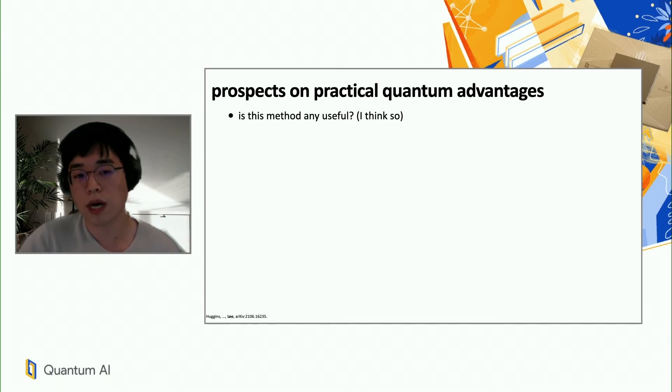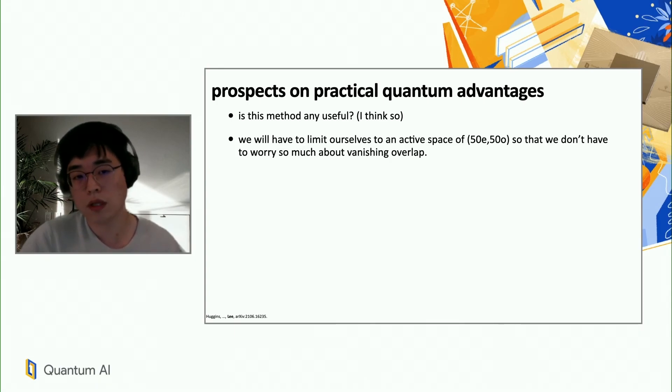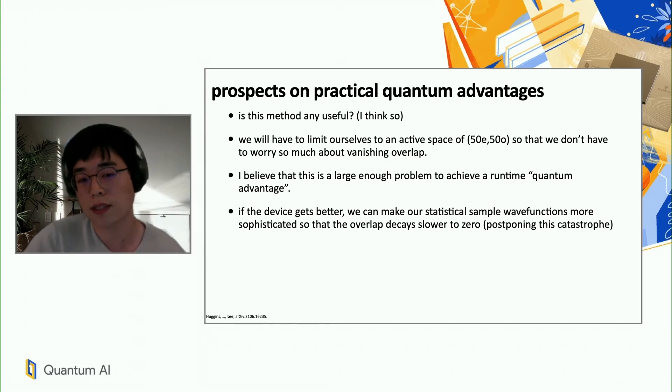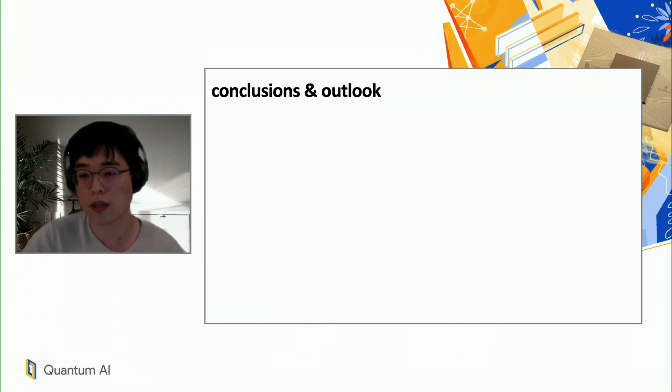Is this method any useful? This seems like a big problem, but I still think so. And I will tell you why I think so. We'll have to limit ourselves to an active space of 50 electrons and 50 orbitals, so that we don't have to worry so much about this vanishing overlap problem. But I would like to really emphasize that although we only have 50 orbitals for the quantum processor, classically, due to this virtual correlation energy technique, we can have hundreds of electrons to simulate. We would be computing correlation energy of hundreds of electrons, but we will just limit ourselves to 50 electrons and 50 orbitals for the qubit space. I believe this is a large enough problem to achieve a runtime quantum advantage. Just end-to-end runtime would be shorter with the quantum processor than with the classical computer. If the device gets better, we have a way to postpone this catastrophe, but formally it's still exponential, but we can postpone this catastrophe. Appendix F of our paper discusses this in great detail, so you can actually take a look at Appendix F.